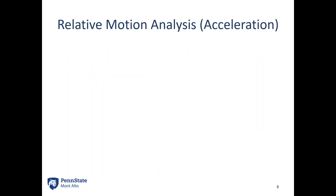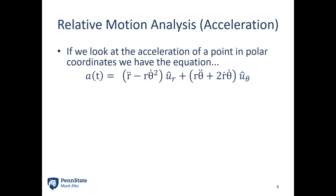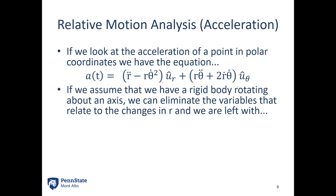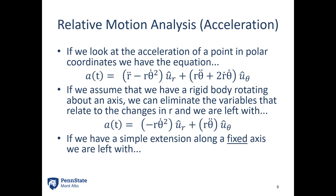Moving on to acceleration: the original equation has terms in the R direction and the theta direction. If we assume a rigid body rotating about an axis with no extension, we eliminate variables relating to changes in R — getting rid of everything with R-dot and R-double-dot. If we have extension along a fixed axis, only R-double-dot remains, since theta-dot and theta-double-dot terms are eliminated. So: extension and rotation uses the full equation; just rotation uses the second equation; just extension uses the third equation.